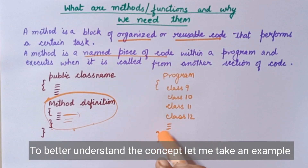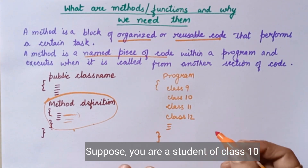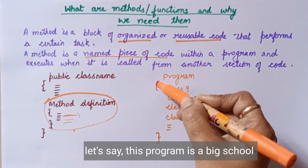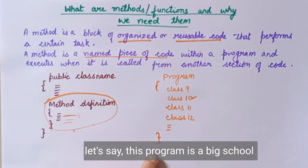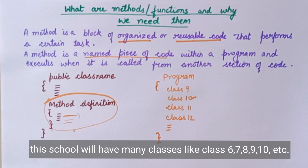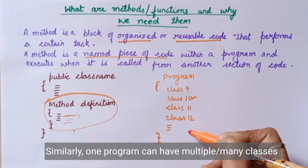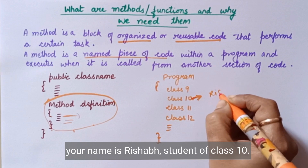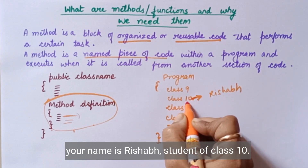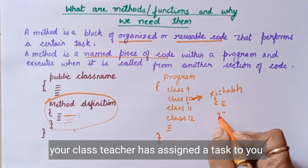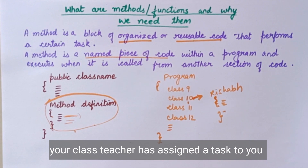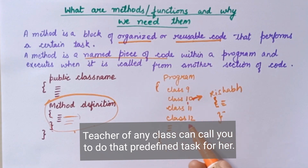I am taking an example to understand this concept properly. Suppose you belong to a particular class — you are a student in class 10th. This program starts and this bracket closes. This program is a school; there will be many classes in this school: class 6, 7, 8, 9, 10, etc. You are a student and your name is Rishabh. Rishabh belongs to class 10th. You have been given a task — your class teacher has assigned you work. Class 9 teacher has called you.